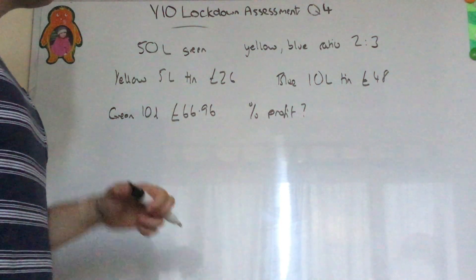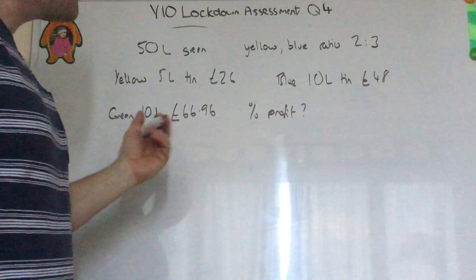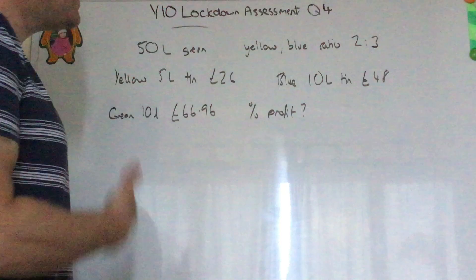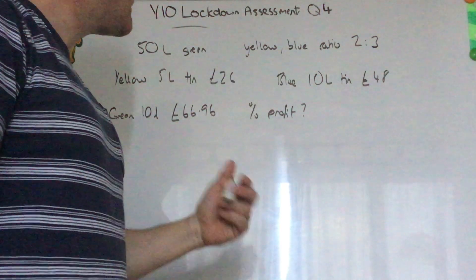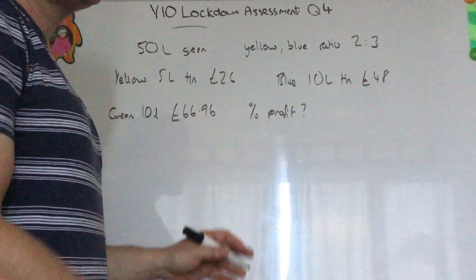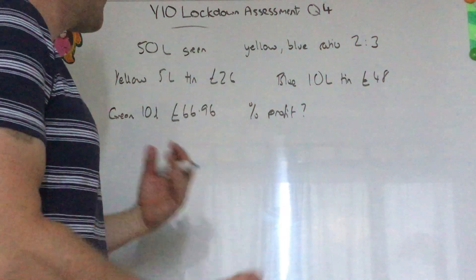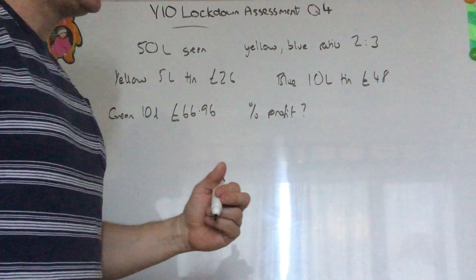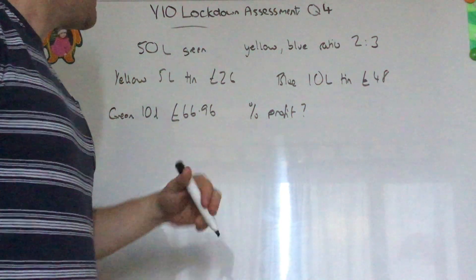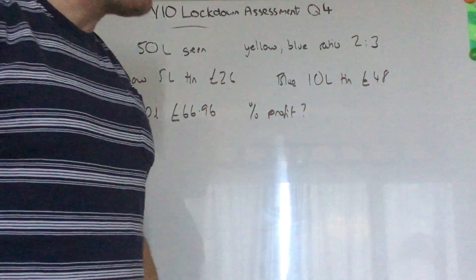It says what's his percentage profit for each tin of green paint? That's going to be the same percentage profit as his total profit because he's making the same profit on every single tin of green paint. His overall percentage profit will be the same as one for each tin. So it's easier to work out his total profit percentage than for each tin. You could divide each number by five but you get the same answer.